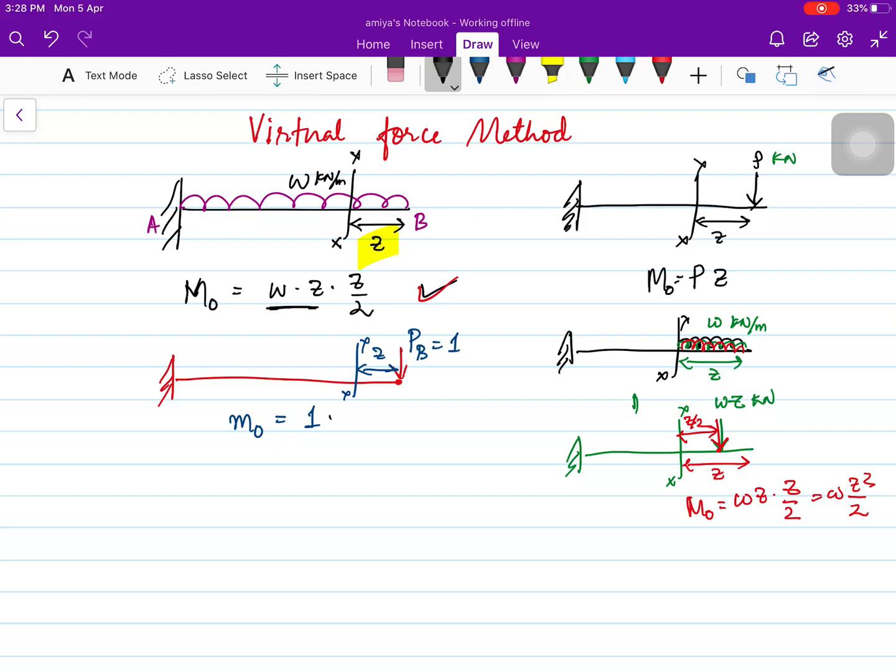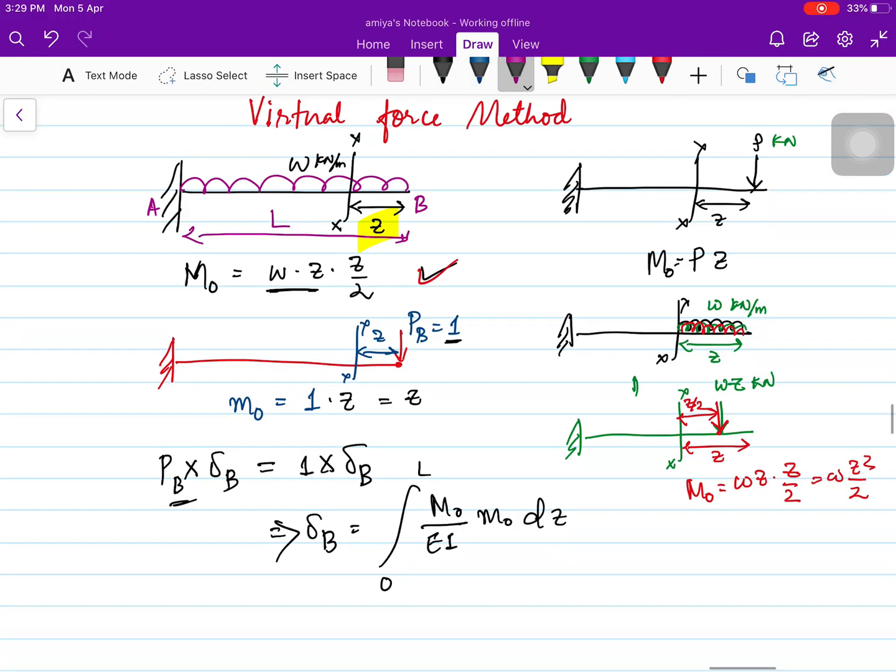Since this is a point load, your deflection at B: force into displacement, which equals P_B (unit force applied) into displacement. This implies displacement at B equals integration of moment due to applied force multiplied by moment due to unit load, 0 to L. Let this span be L, the span of the cantilever beam.